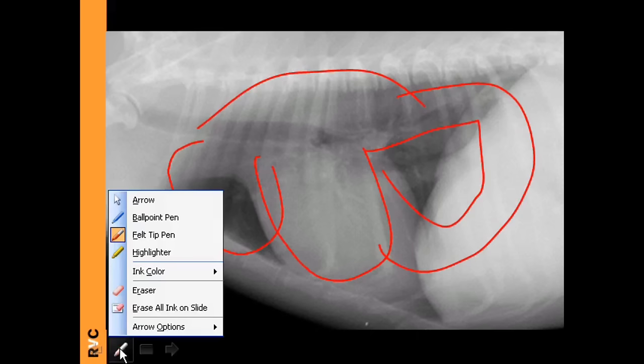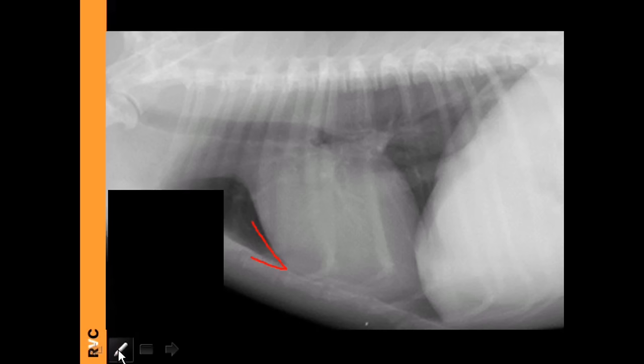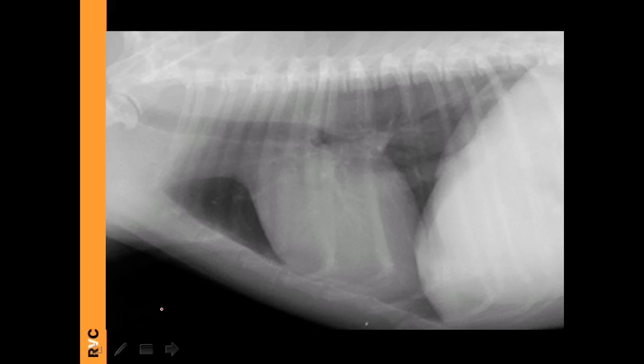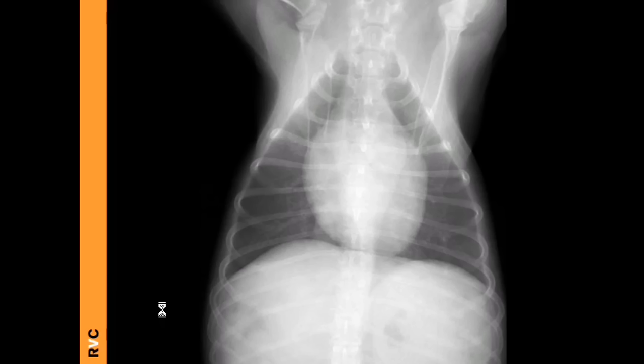Fissure lines can be seen if there is thickening of the pleura or fluid in the pleural space. The lung lobes normally have a nice pointy margin. We can sometimes identify bronchi — which should not be thick — and vessels that we can measure.